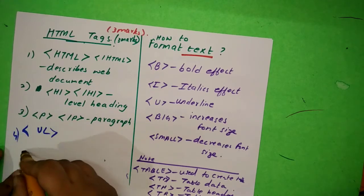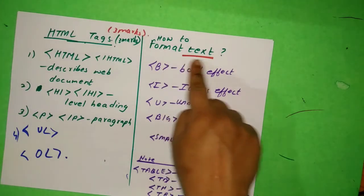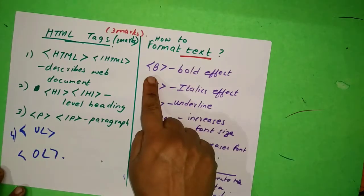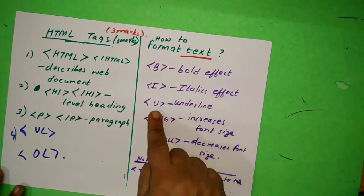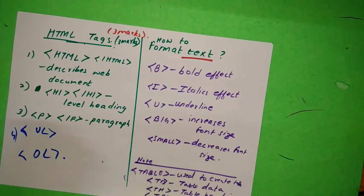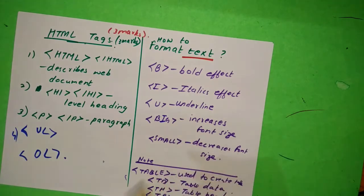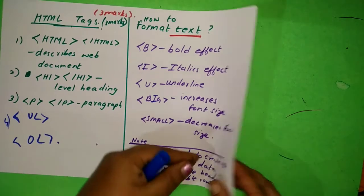So some important tags is there. So you can have UL also - UL for unordered list and OL for ordered list. These are important tags. Somewhere they may ask you what is the text tags that you have? So B - in Word you would have learned Microsoft Word - B bold effect, I italics, U underline, then big - this is big to increase the font size - and then small to decrease the font size. It's very easy. And if they ask you about table, just write the table tag. The answer in angular brackets used to create table: TD table data, TH table heading, and TR table row.